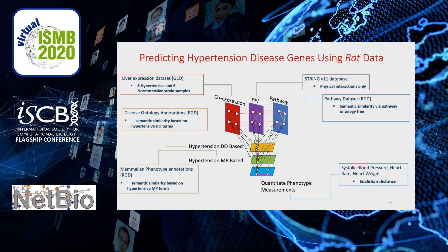We calculated ontology-based semantic similarity between genes using pathway annotations at the RAT Genome Database. We created a multiplex RAT strain similarity network using annotation data at RGD. We generated disease ontology and mammalian phenotype ontology-based strain similarity layers. For these two layers, we determined a list of hypertension-related disease ontology and mammalian phenotype ontology terms to make them context-specific.